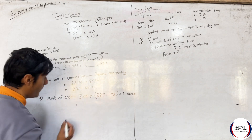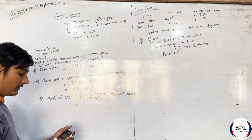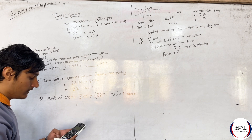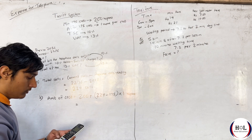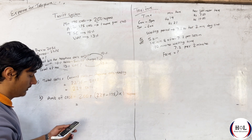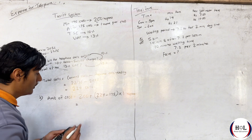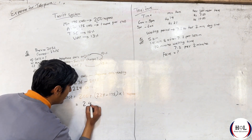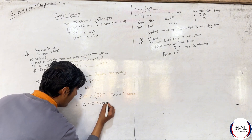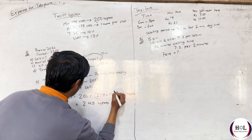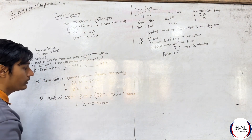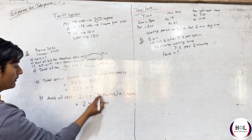Now this number is 200. That number is 224 minus 175. Now it is 249 rupees. So 200 plus 49.